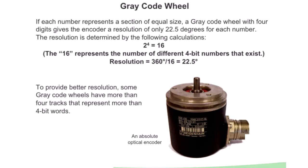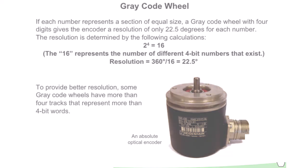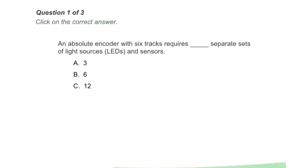If each number represents a section of equal size, a gray code wheel with four digits gives the encoder a resolution of only 22.5 degrees for each number. The resolution is determined by the following calculation: resolution equals 360 divided by 16, which equals 22.5. The 16 represents the number of different four bit numbers that exist.